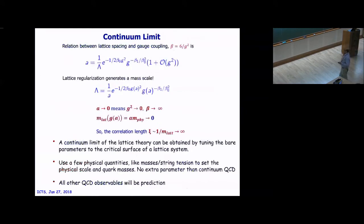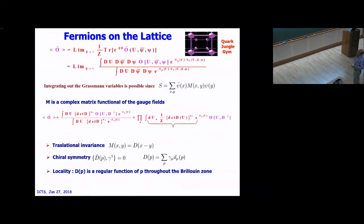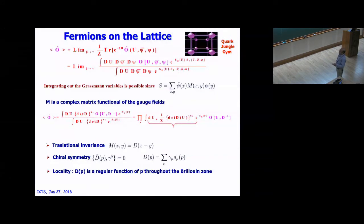Now we have to talk about the fermion action on the lattice. We can write the observable in terms of the partition function as a path integral. The funny thing is that fermions are Grassmann variables. You can write your fermion action as ψ̄ M ψ — this is like a Gaussian thing. You can integrate them out and it becomes a determinant. So you integrate out the fermions and get a partition function in terms of only the gauge field, while of course the fermion fields are also included through the determinant.